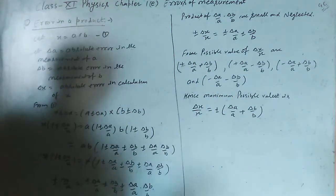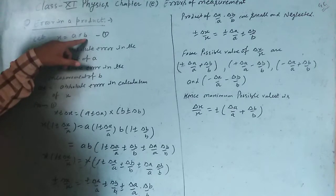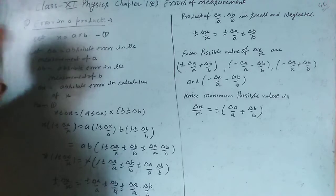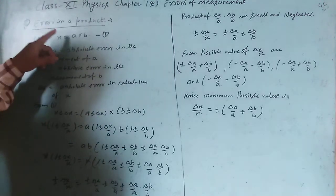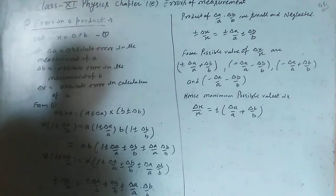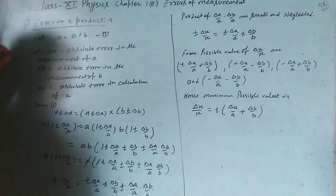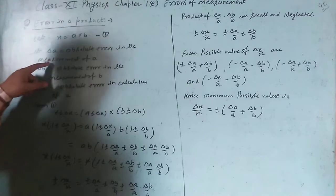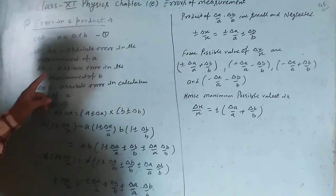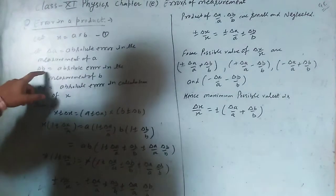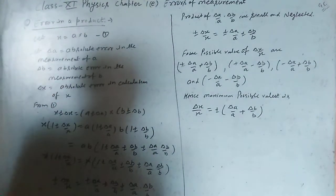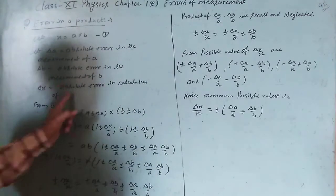Let x equal to a into b, where a and b are two individual quantities whose product we want to find. Delta a is the absolute error in the measurement of a, delta b is the absolute error in the measurement of b, and delta x is the absolute error in the calculation of x.